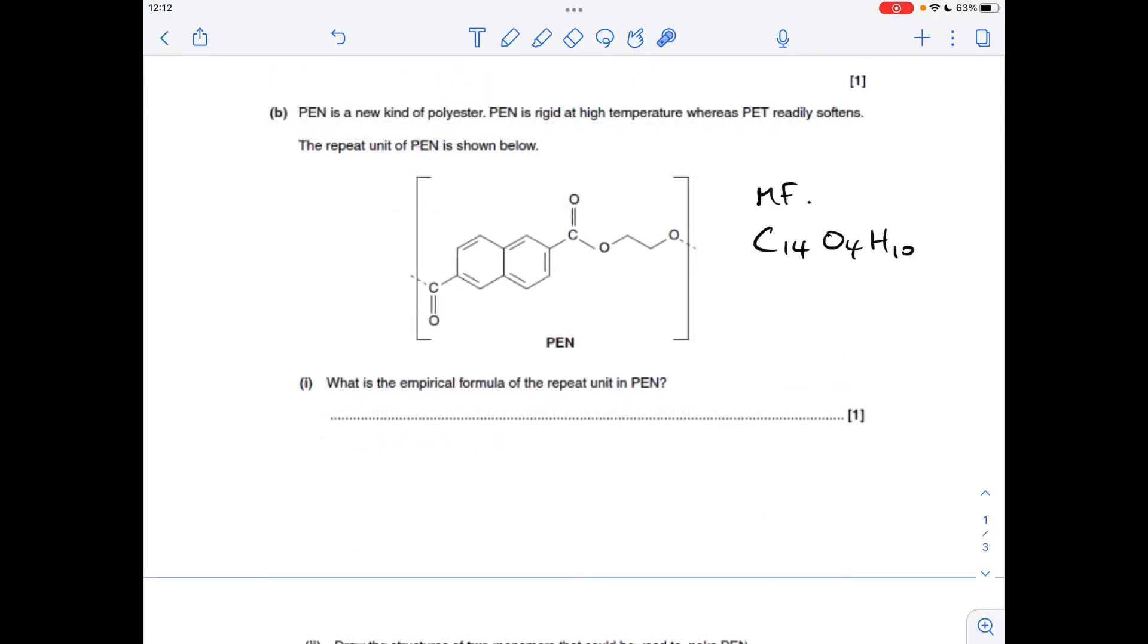Part B, so the molecular formula of this repeat unit is C14O4H10. They're all divisible by 2, so the empirical formula is C7O2H5. Obviously you can have them in any order as long as the number is next to the correct atom.